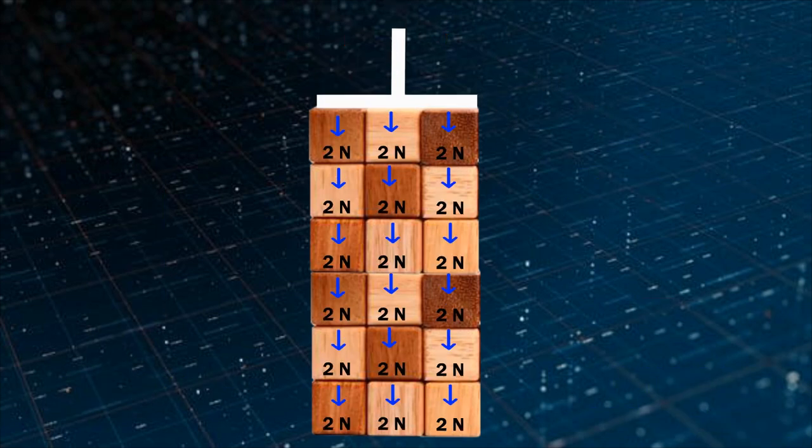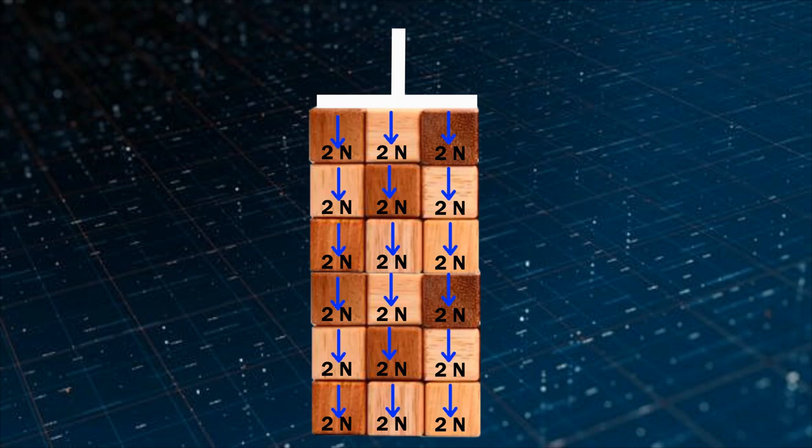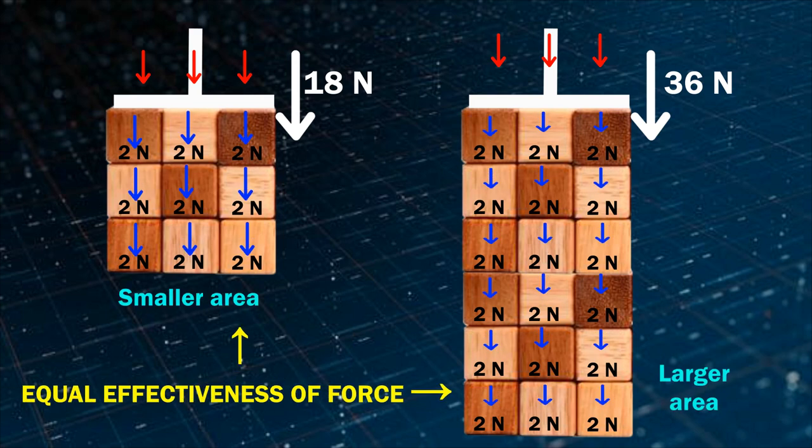If we want each block to receive 2 newton of force, we need to increase the force to 36 newton. And now effectiveness of force will be same as that of smaller area.